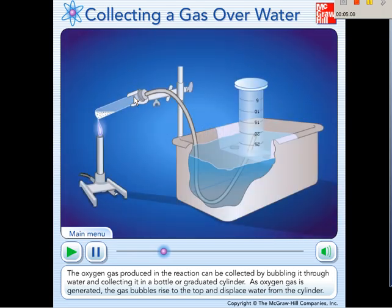The oxygen gas produced in the reaction can be collected by bubbling it through water and collecting it in a bottle or graduated cylinder. As oxygen gas is generated, the gas bubbles rise to the top and displace water from the cylinder.